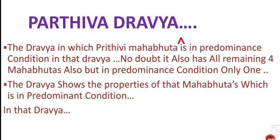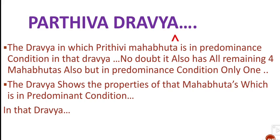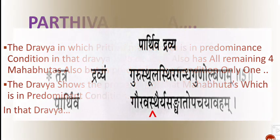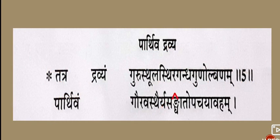That is called Parthiv Drava. The Drava shows the properties of that Mahabhuta which is in the predominance condition. Parthiv Drava shows properties such as Guru (heaviness), Sthira (stability), Sandra (density), Gandha (smell), and Manda (slowness).